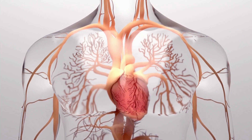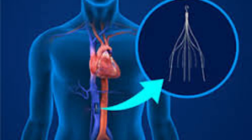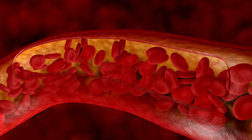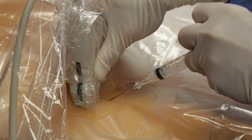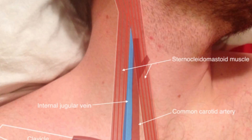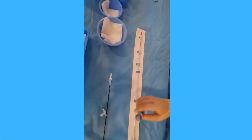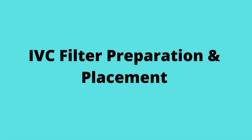The heart then pumps the blood to the lungs to pick up oxygen. When the filter is placed in the IVC, the blood flows past the filter. The filter catches blood clots and stops them from moving up to the heart and lungs, helping to prevent pulmonary embolism. The IVC filter is placed through a small incision under ultrasound and fluoroscopy guidance in a vein in the groin or neck, and a thin flexible tube catheter is inserted.